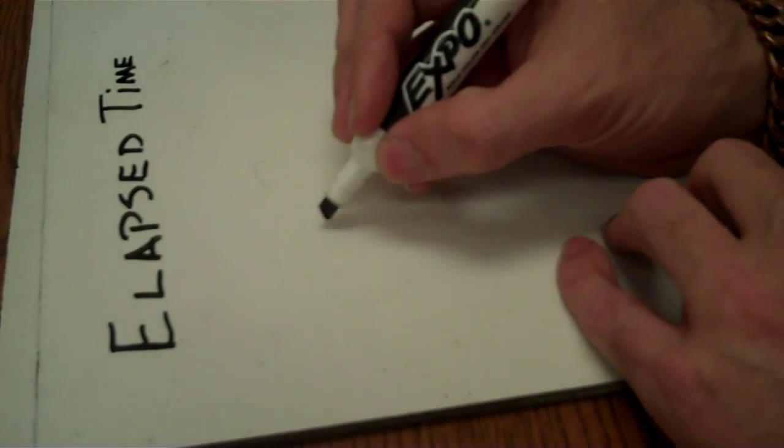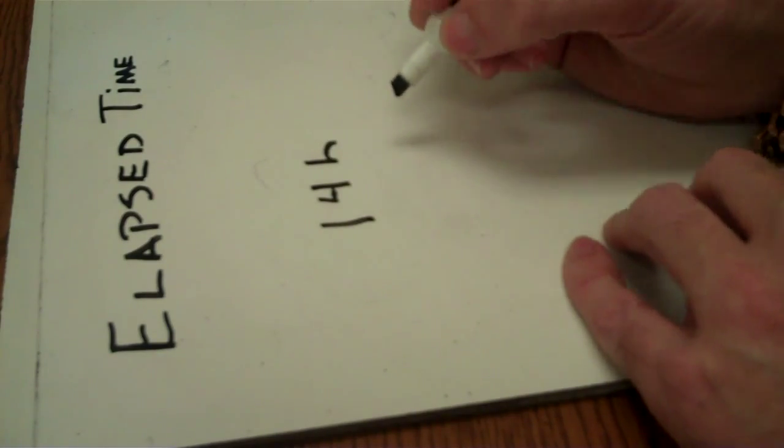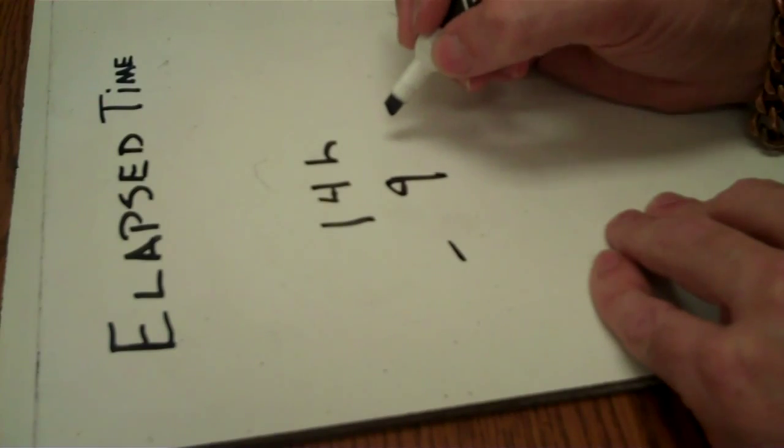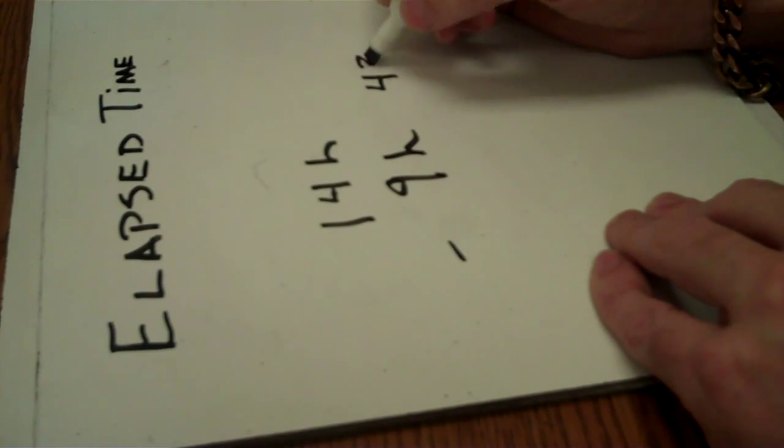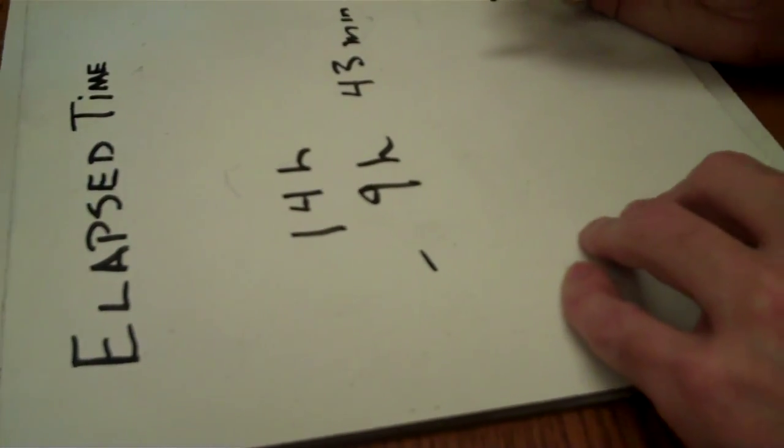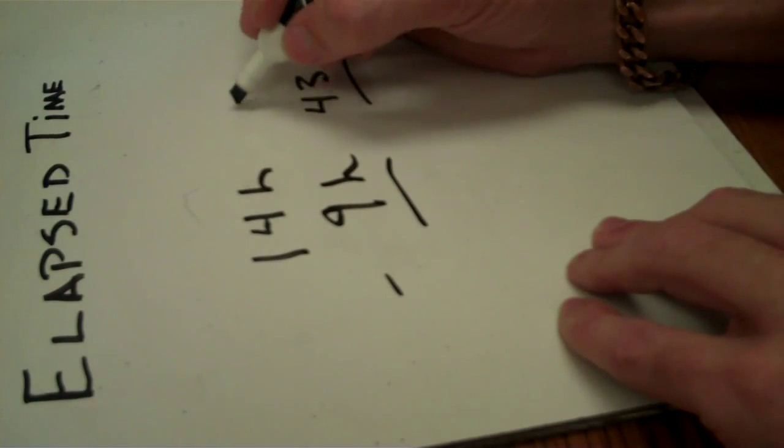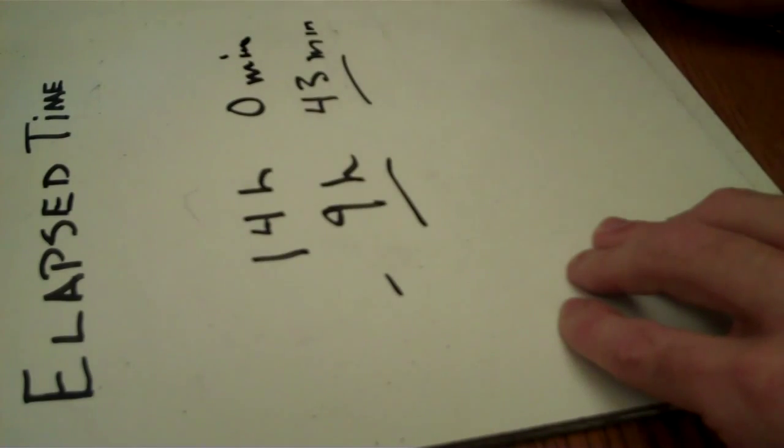Some of you had this one. If you have 14 hours, and if you want to subtract 9 hours and 43 minutes from that, it kind of threw you off. What I would suggest that you do is go ahead and put 0 minutes in that blank spot.